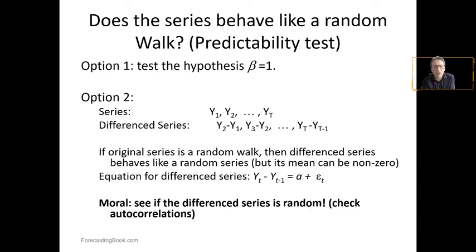The moral of this is that if the differenced series is random, we need to check for the autocorrelations. When testing for this hypothesis of beta being equal to one, that means the actual series has a very strong random walk, meaning it's unpredictable. The future can be positive or negative.